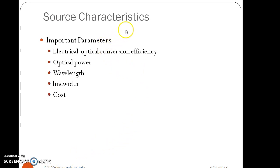There are some optical source characteristics which are to be taken care of: Electrical optical conversion efficiency, optical power, wavelength, line width and cost.